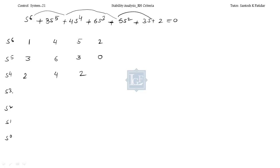Now find the next row: 2×6 − 12 divided by 2 equals 0; similarly the other entries are 0, 0. So we are getting a row of zeros here — this is the first ROZ. So we have to frame the auxiliary equation over here.